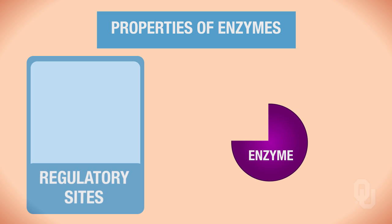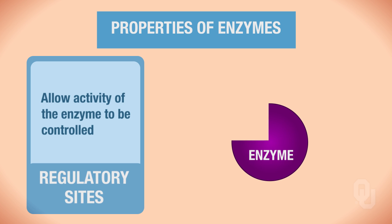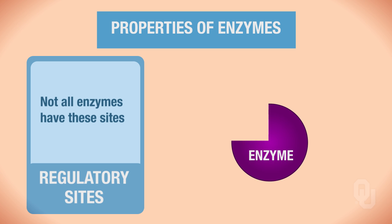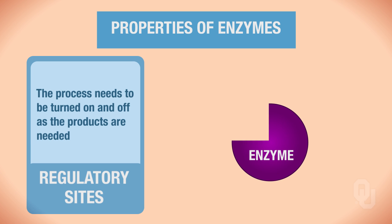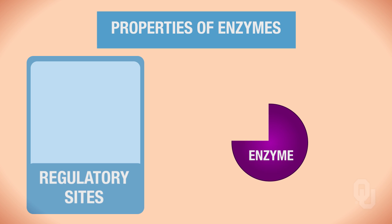Now, enzymes also have regulatory sites that allow the activity of the enzyme to be controlled. Not all enzymes, however, have these regulatory sites. So these reactions occur as long as the enzyme and the substrate are present. But for other reactions, especially those in the body, the process needs to be turned on and off as the products are needed. These controlled reactions use enzymes with regulatory sites, which allows for an enzyme to be activated like a switch.